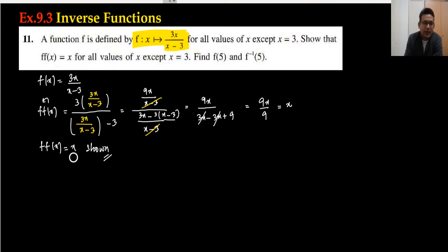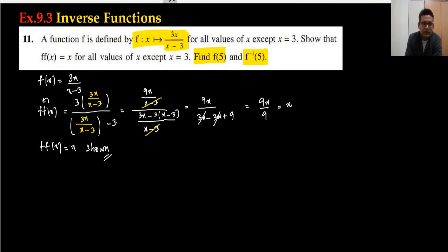Since there is no x in the denominator of the simplified result, there is no restriction — this holds for all values except x = 3. For the next part, we find f(5) and f⁻¹(5). f(5) = 3×5 / (5-3) = 15/2, which equals 7.5.